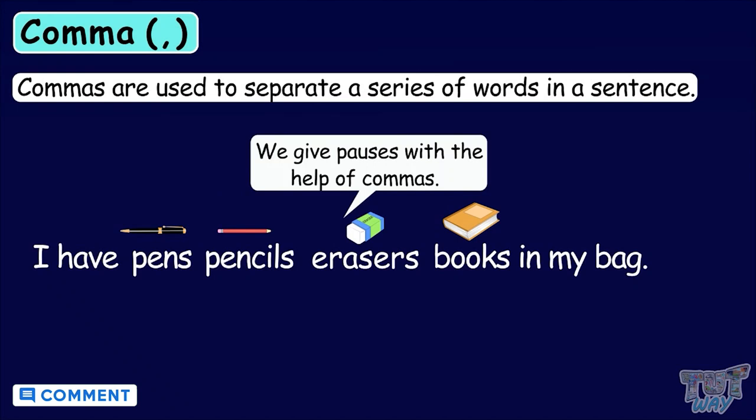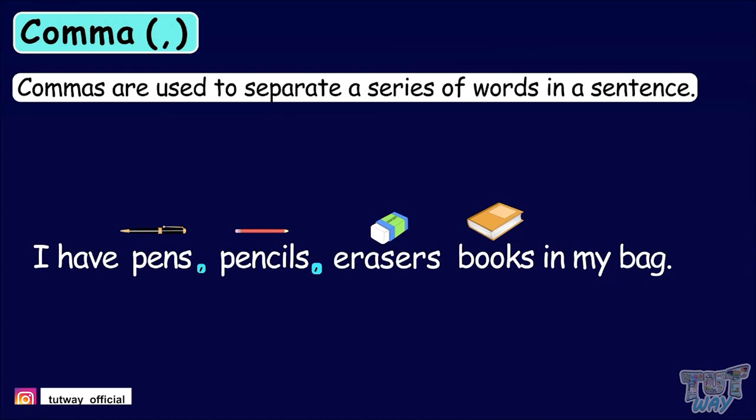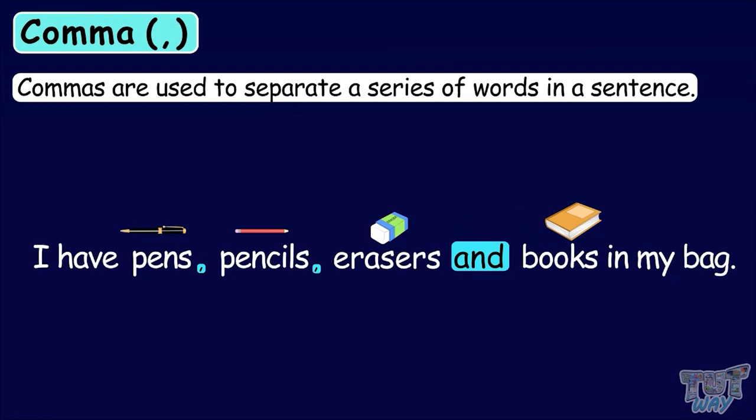When we have a series of naming words in a sentence, the initial naming words are separated with commas and the last one is separated with the conjunction AND. Commas are used to separate a series of words in a sentence.